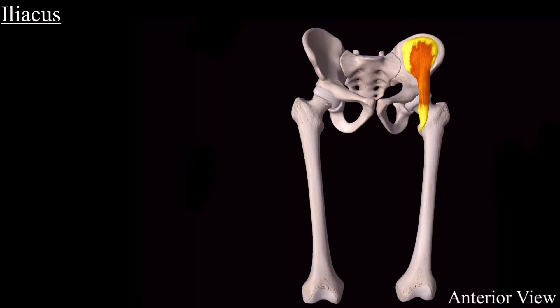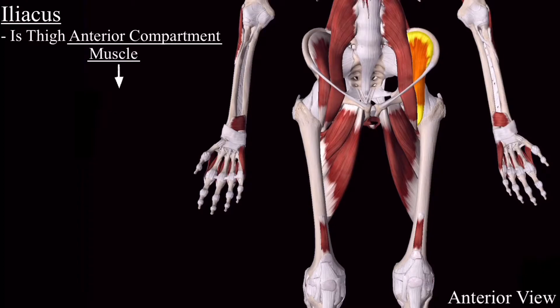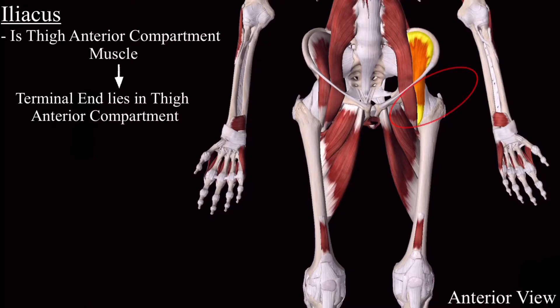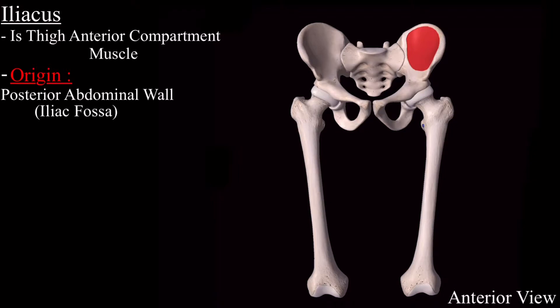The iliacus muscle is also one of the thigh interior compartment muscles, because the terminal end of this muscle lies in the interior compartment of the thigh, just like the psoas major muscle. It originates from the posterior abdominal wall and, to be more specific, it originates from the iliac fossa of the hip bone.